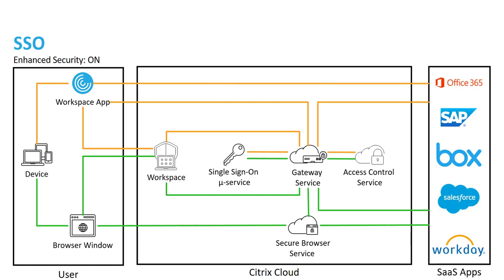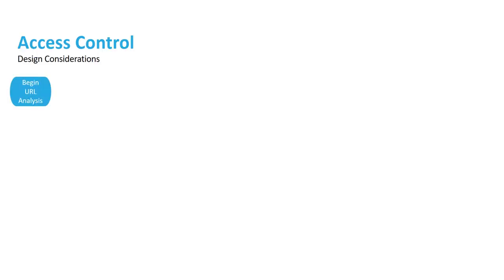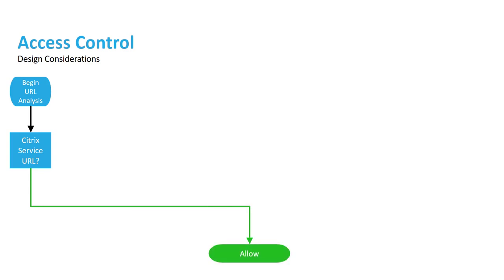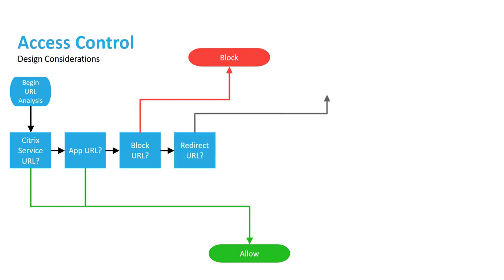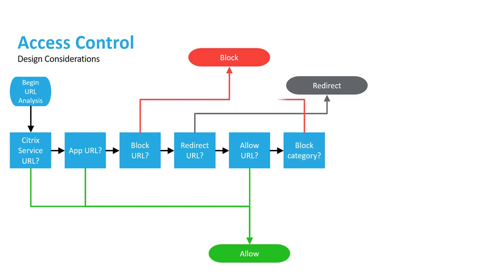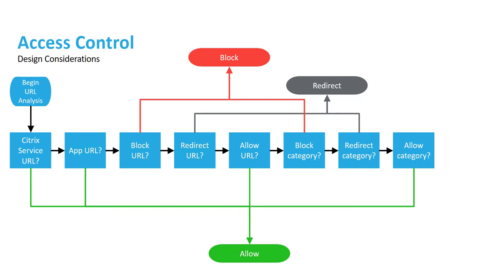An additional feature included with enhanced security is analysis of any URL that a user might select within the SaaS application. First, Access Control determines if the selected URL is associated with a Citrix Cloud service — if so, access is allowed. Next, is that URL associated with a particular SaaS or web-based application? If it is, that URL is allowed. Then, has it been specifically blocked by the administrator? If so, it's blocked. Has it been specifically redirected to secure browser? Has it been specifically allowed by the admin? We next look at overall categories — have we specifically blocked, redirected, or allowed a category like social media or job boards? If we go through this entire analysis and still haven't had a hit on this particular URL, the URL is then allowed to be accessed.